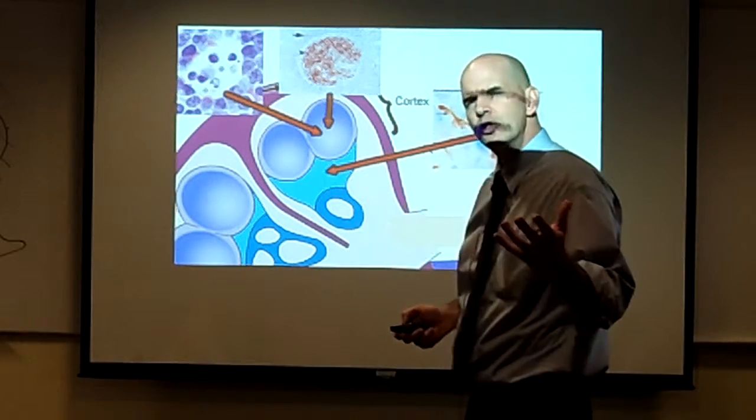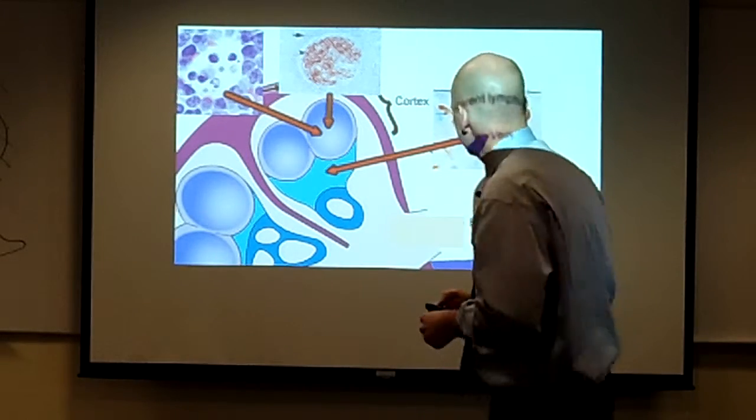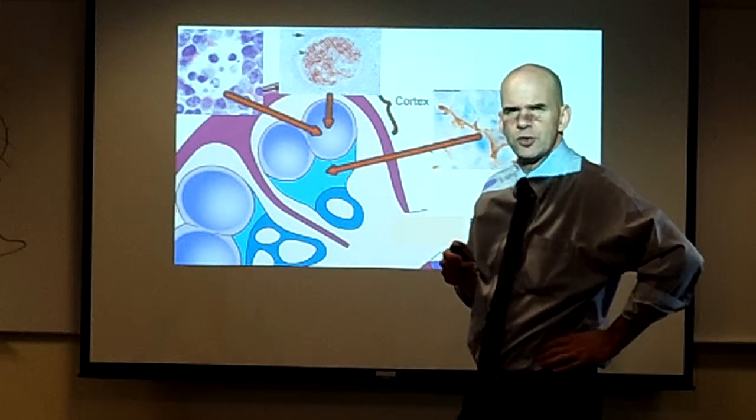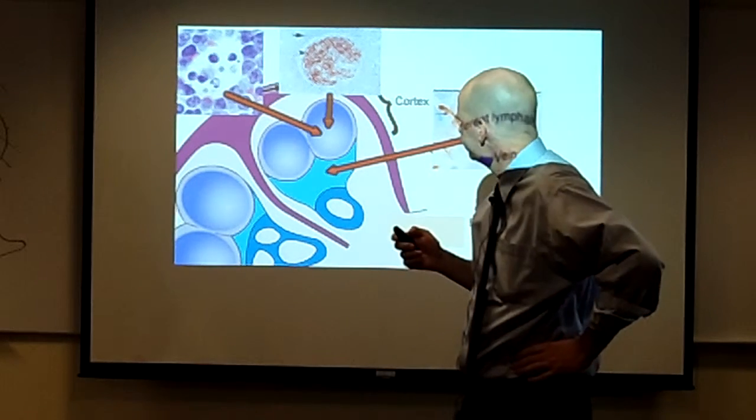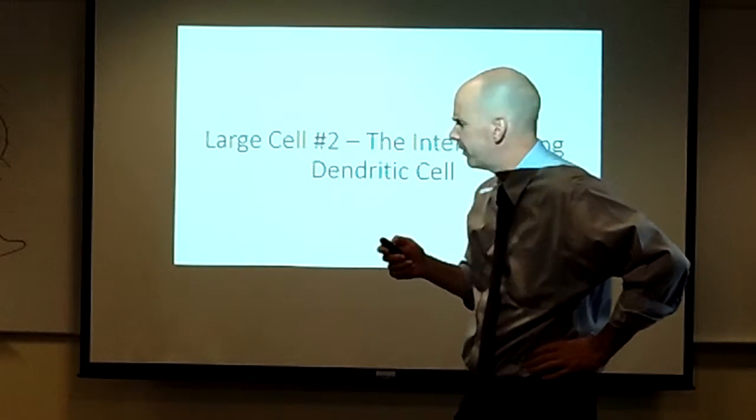Let's take a look at some of these supporting cells next. First, let's take a look at the interdigitating dendritic cell. This is our second large cell, the lymph node.